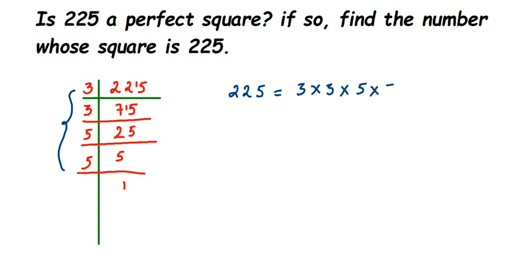Now the question here is: is 225 a perfect square? To check this, like I said before, the factors should be in a pair. You can see that this is forming a pair, these factors are in a pair, and this is also in a pair. So we can say that yes, 225 is a perfect square.